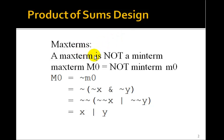Now, a maxterm is not a minterm. That's easy to remember. Which means that the maxterm M0, big M0, is not minterm little m0. So we can actually write big M0 is not little m0. But you remember what little m0 was. That was just not x and not y. So big M0 is just not that.